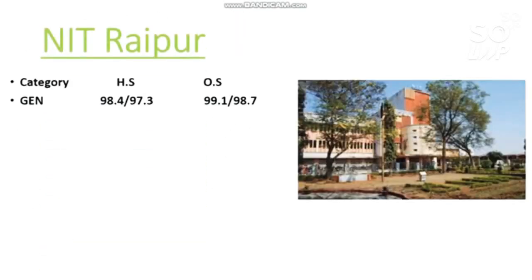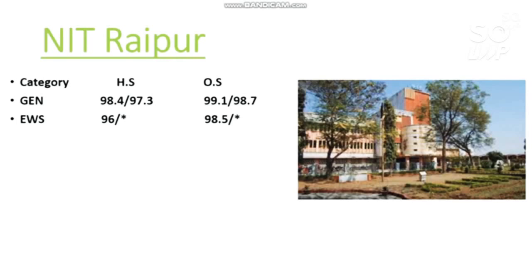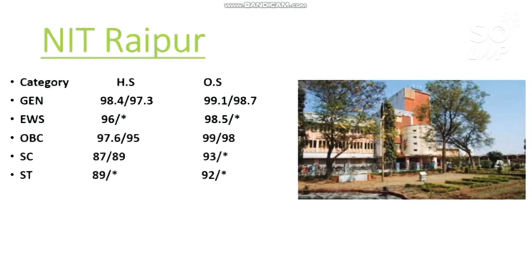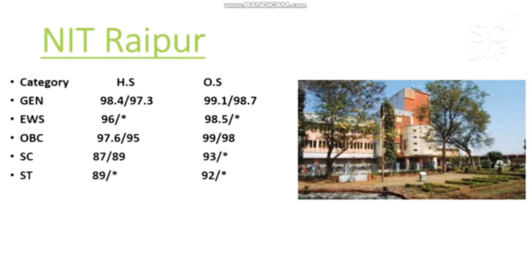The next NIT is NIT Raipur. The General cutoff is 99.1 percentile required to get CS. For other state male candidates, you can check other cutoffs slide-wise. For EWS: 98.5 percentile. For OBC: 99 percentile. For SC: 93 percentile. For ST: 92 percentile.